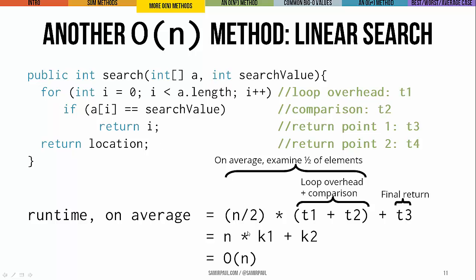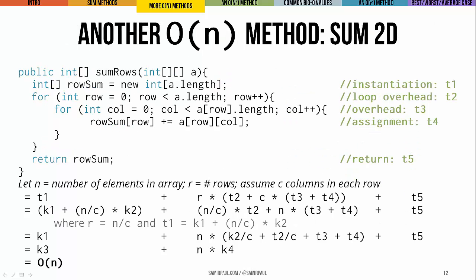Putting it all together: on average we're going to look at half the elements, so our factor is n divided by two, times all the stuff that happens every time the loop runs, plus the time for the final return. That turns into a constant k2, and the elements inside the parentheses are also a constant k1. We see a linear expression, so this algorithm is also O of n. In other words, doubling the size of our input array would about double the amount of time it takes to run the method.